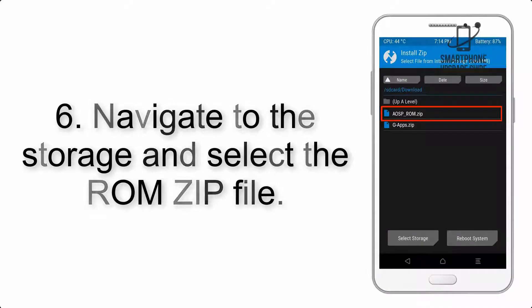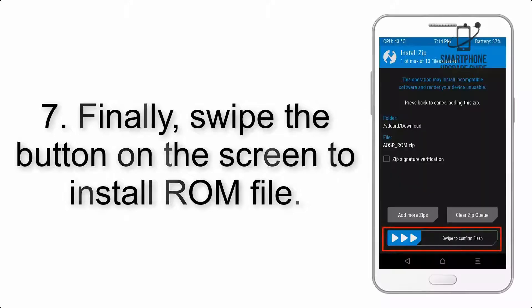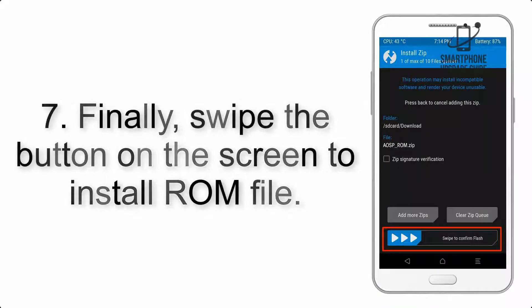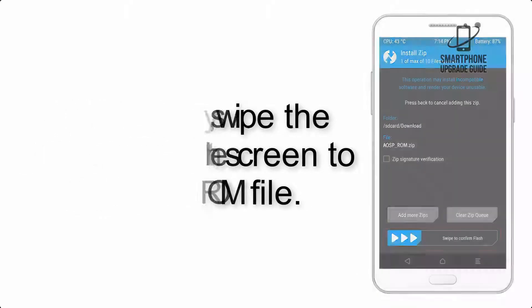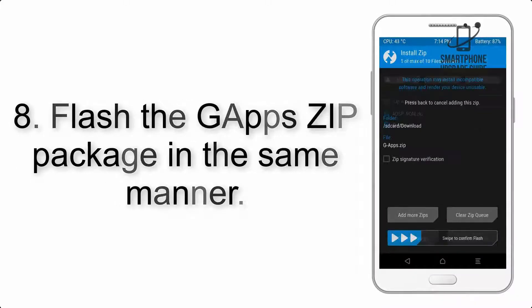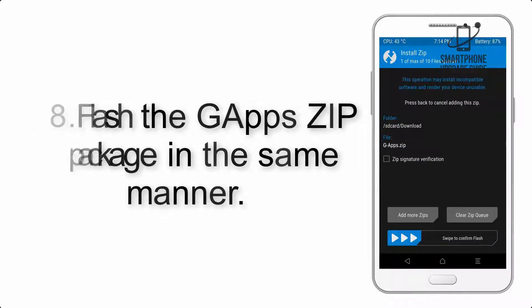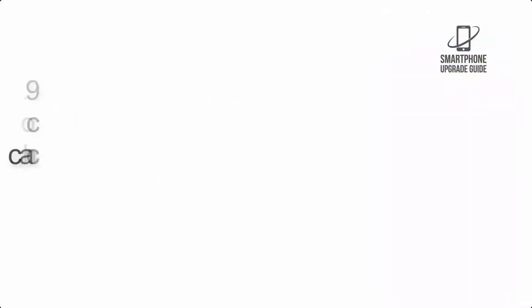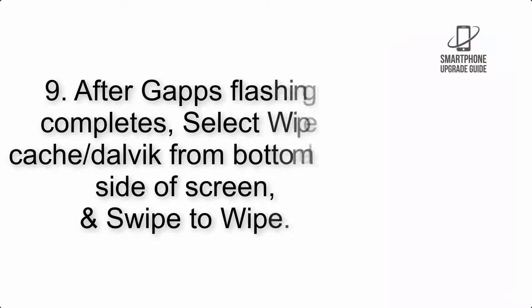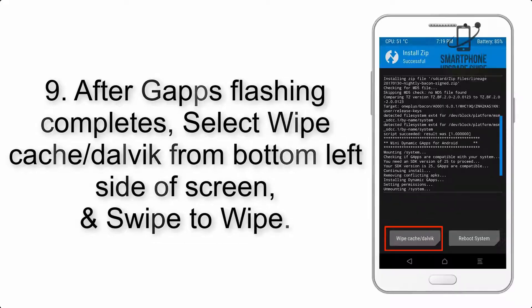Step 5: Go back to the recovery main screen and tap on the Install button. Step 6: Navigate to the storage and select the ROM zip file. Step 7: Swipe the button on the screen to install the ROM file. Step 8: Flash the GApps zip package in the same manner.